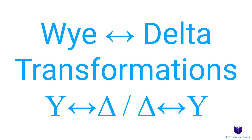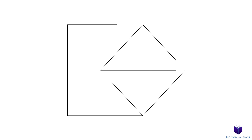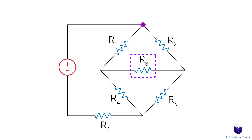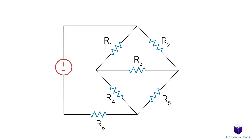Sometimes you're going to come across circuits where it's not possible to reduce the circuit using just series and parallel combinations. Let's see if we can reduce this circuit by combining resistors. If we look at this node and walk down the conductor, we see that it splits the current here. It's the same thing and we can't do anything because of this resistor in the middle. In other words, there aren't any resistors in series or parallel. So how can we simplify this circuit?